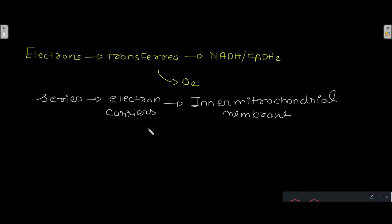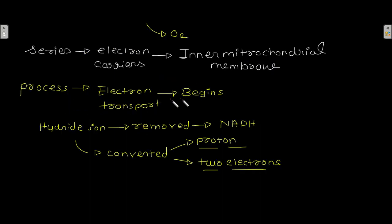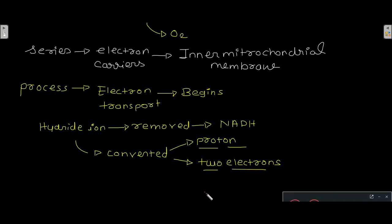This process of electron transport begins when the hydride ion is removed from NADH. This hydride ion is converted into a proton and two electrons. These two electrons then flow through a series of electron carriers in the inner mitochondrial membrane and at last reach oxygen, producing a water molecule.